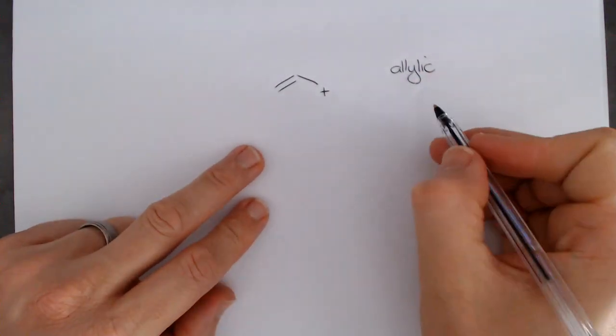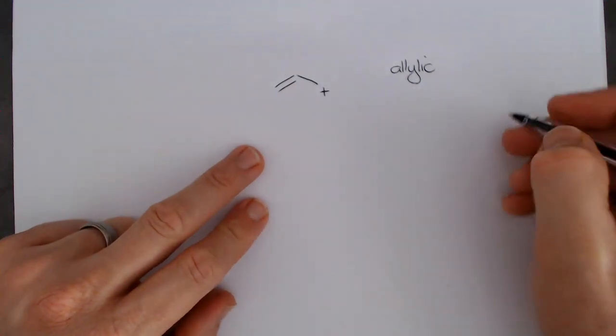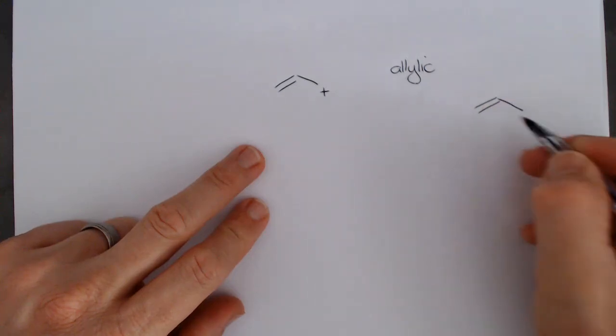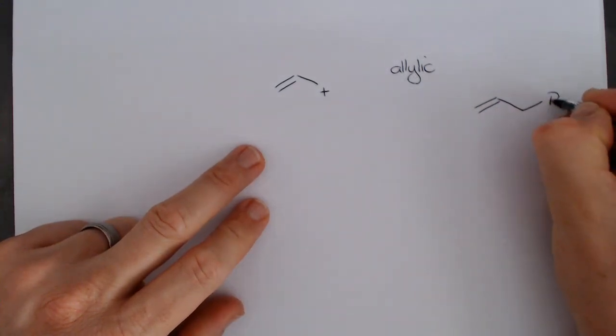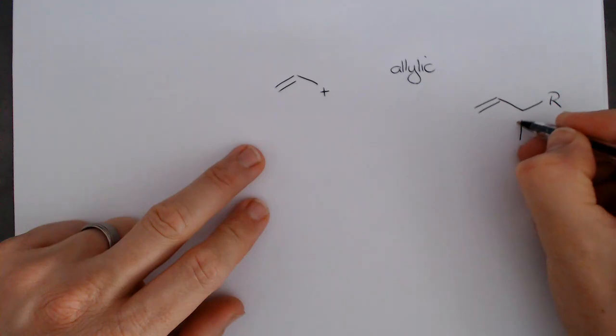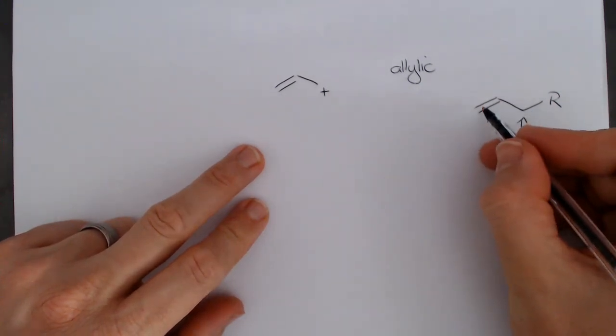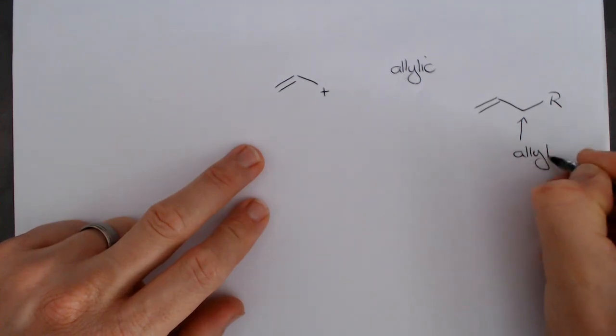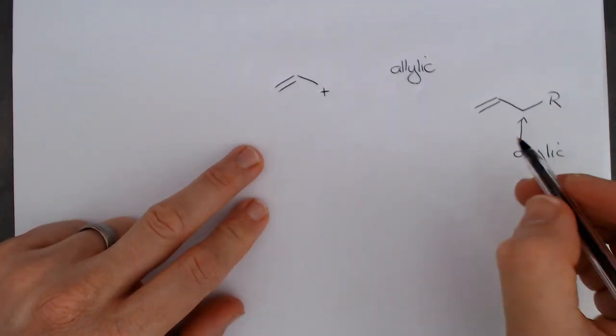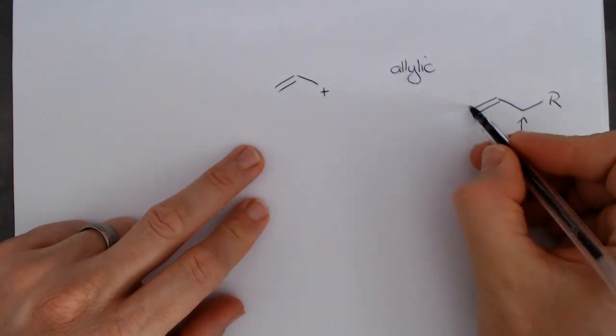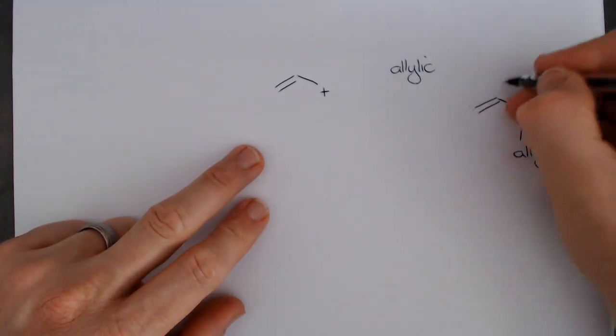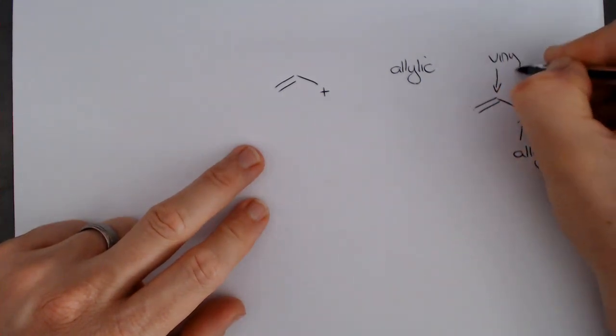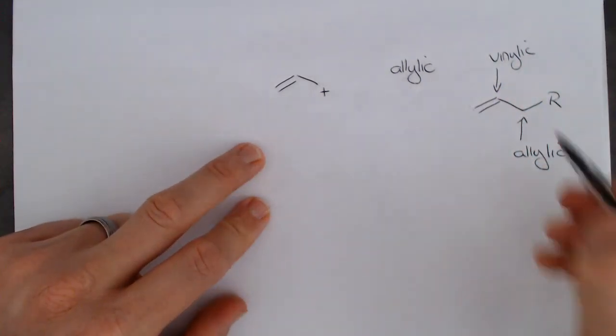This is what is known as an allylic system. What we're talking about is that if we have any kind of system that is set up with a double bond on it like that, I'm going to put an R group over there, this position over here, the carbon that is next door to the pi bond is known as the allyl or allylic position. Also, carbons that have double bonds on them, like this, and these are words that we should know, are known as the vinylic position or vinyl carbons.